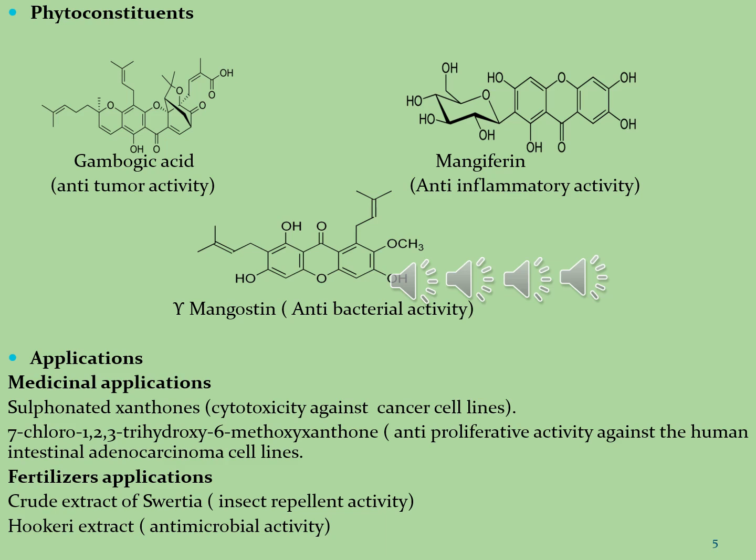The next molecule is mangostin, found in the plant Garcinia mangostana. It is used for diarrhea, urinary tract infections, gonorrhea, thrush, tuberculosis, menstrual disorders, cancer, osteoarthritis, and an intestinal infection called dysentery. It is also used for stimulating the immune system and improving mental health.